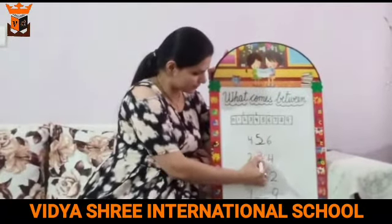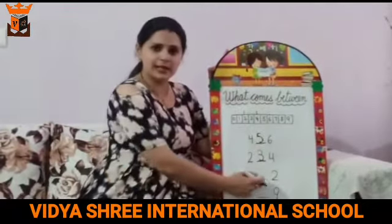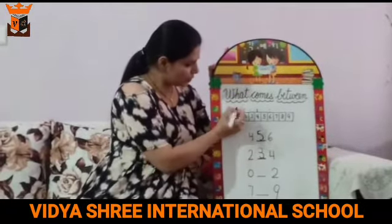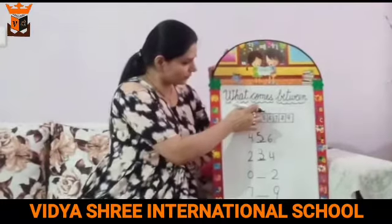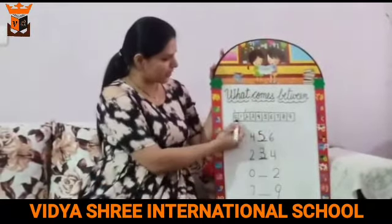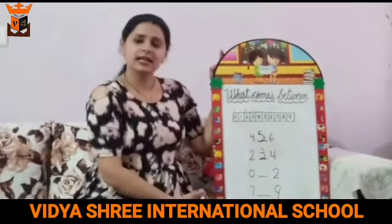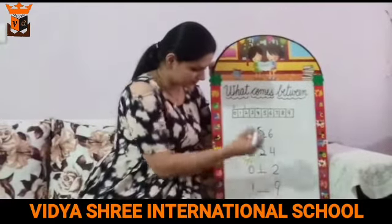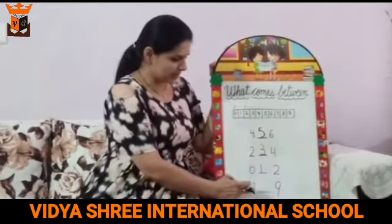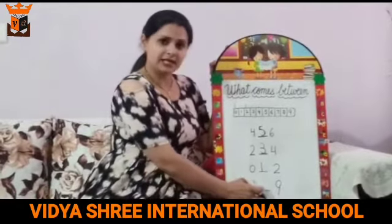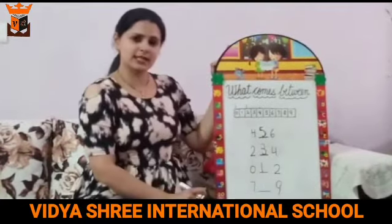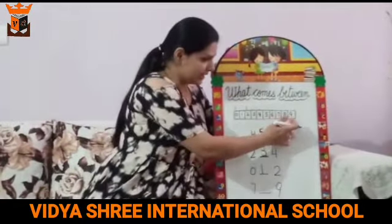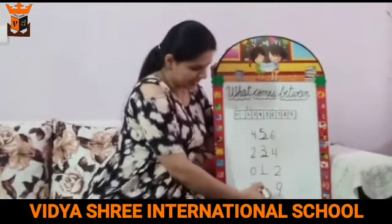That is number 3. Next is 0 dash 2. Which number is coming in between 0 and 2? That is number 1. Next, number 7 dash 9. So what is there in between these two numbers, 7 and 9? That is number 8.